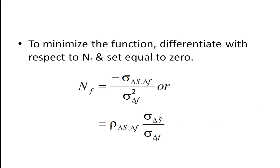If we differentiate with respect to NF — the number of contracts — and set it equal to zero, we minimize the variance. When you minimize something you take the derivative and set it equal to zero. Doing that gives you minus the covariance between the spot and the futures divided by the variance of the futures.